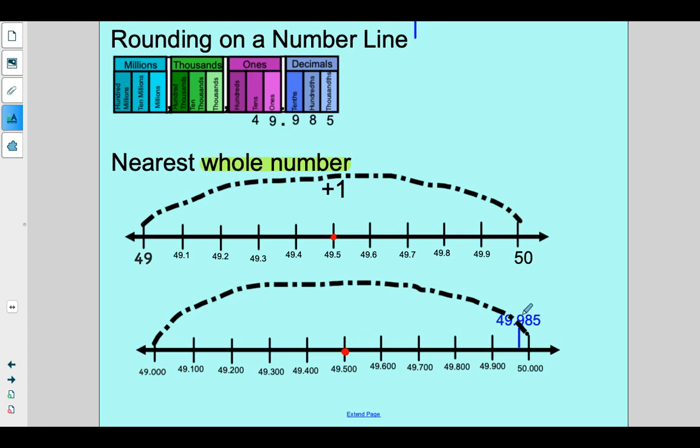So is this number 49 and nine hundred eighty-five thousandths, is it closer to 50 or is it closer to 49? Well, in this case, it's pretty obvious, right? It's closer to 50. So 50 would be our answer rounding to the nearest whole number.